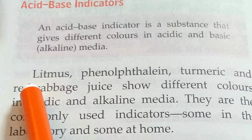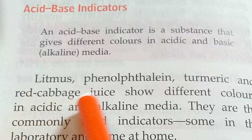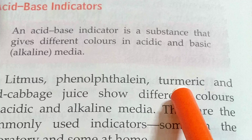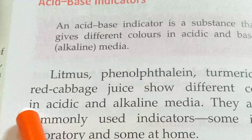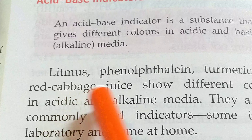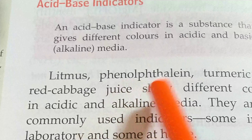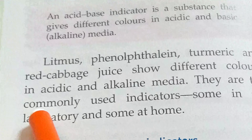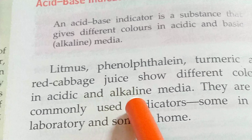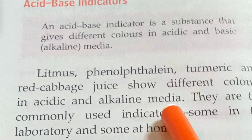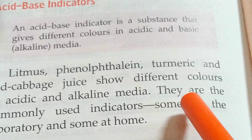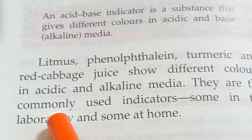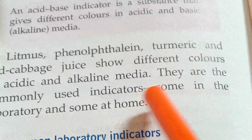These are litmus paper, phenolphthalein, turmeric, and red cabbage juice. They show different colors in acidic and alkaline media. They are the commonly used indicators.